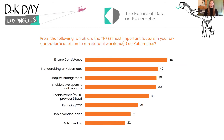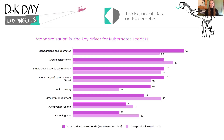We wanted to know what was driving the decision to run stateful workloads on Kubernetes, so we asked people to identify the three most important factors. Consistency and standardization top the list, followed by a number of operational efficiency gains such as simplifying management and enabling developers to self-manage. This is even further underscored when we look at the Kubernetes leaders — the ability to standardize on Kubernetes is very important to them, jumping 10% to the number one spot. The more workloads an organization runs in Kubernetes, the more they can capitalize on this standardization advantage.